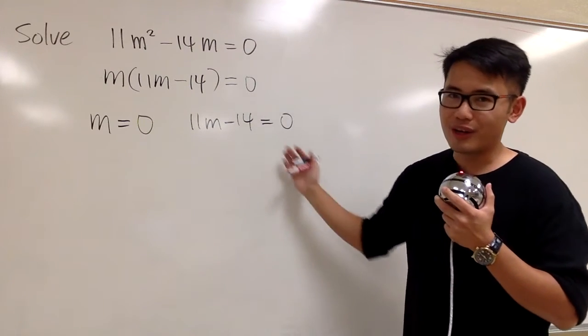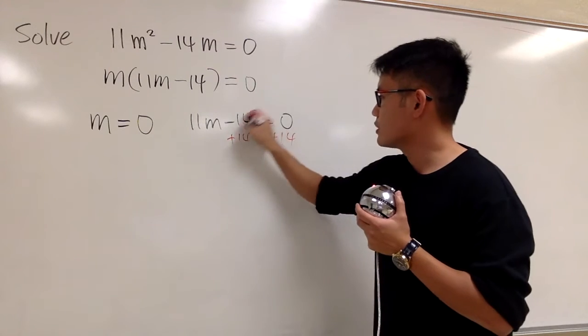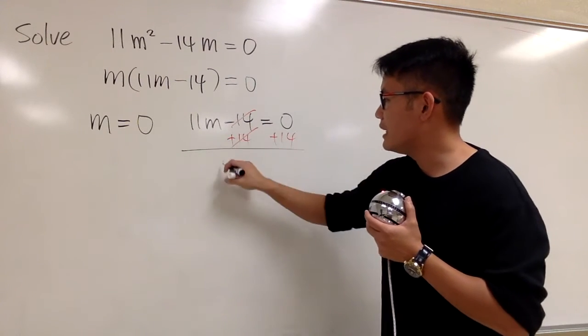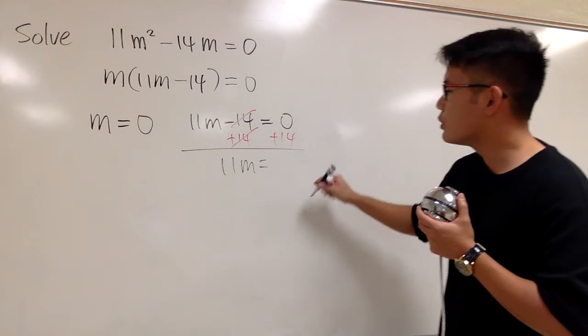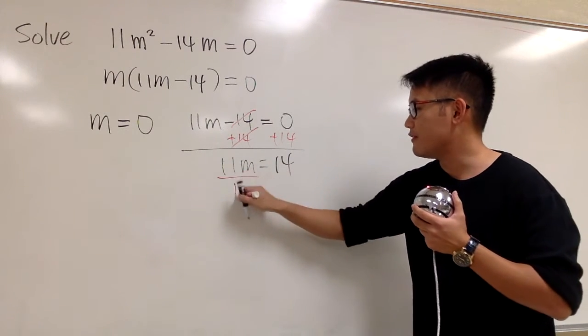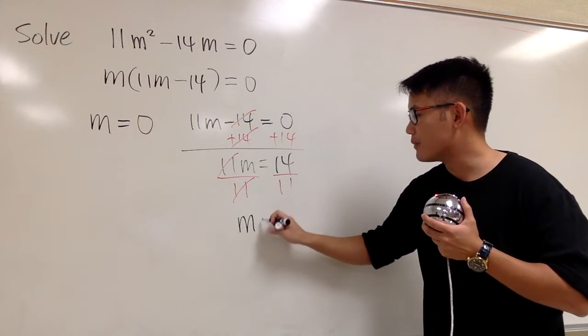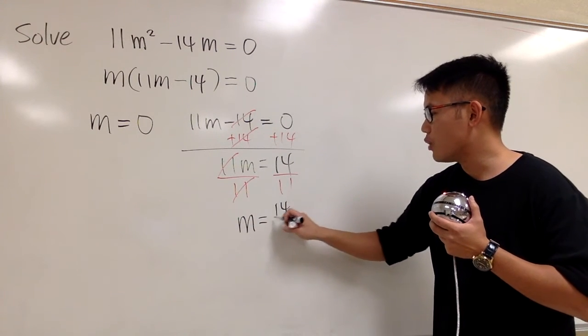Let's add 14 on both sides so that they cancel. And then we have 11m. This is equal to positive 14. This is 11 times m. So, we have to divide both sides by 11 so that we can get the m by itself, which is 14 over 11.